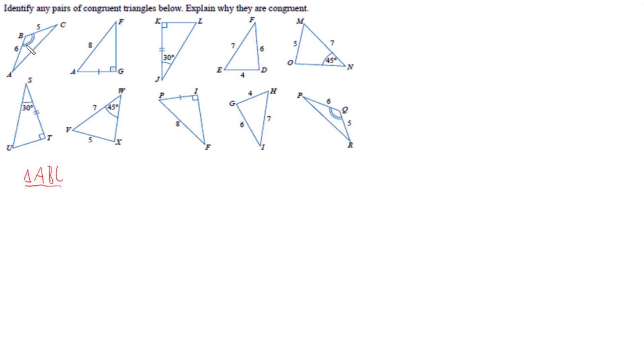We've got that last scenario — two sides, one is 5 and one is 6, and the angle between them. So I want to find another triangle with a side length 6, a side length 5, and the angle between those two sides marked. Going through the shapes, it's possibly going to be this last triangle here. We've got side AB matching side PQ — they're both 6 units long.